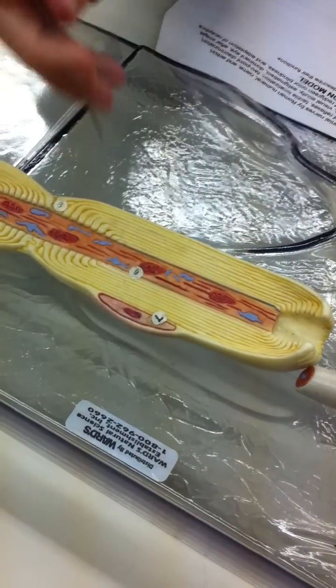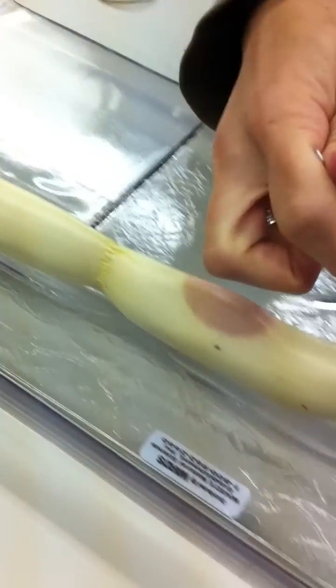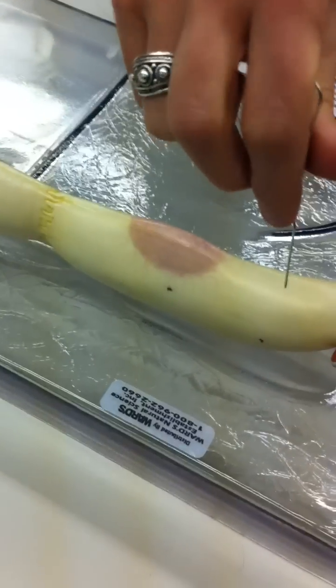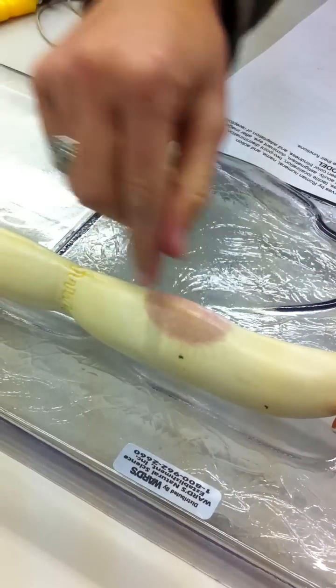And then the outer layer of your axon is your neurolemma. Which is the outer membrane.